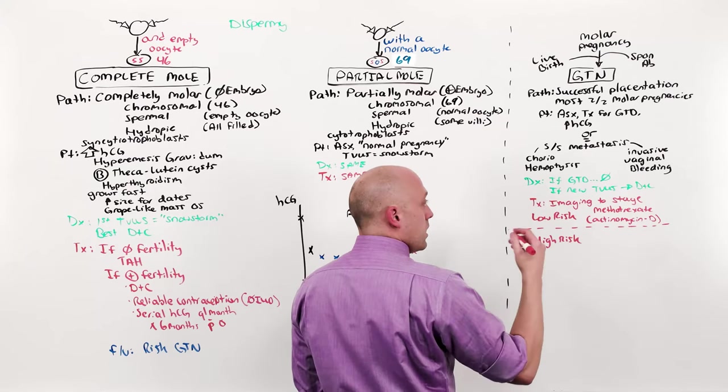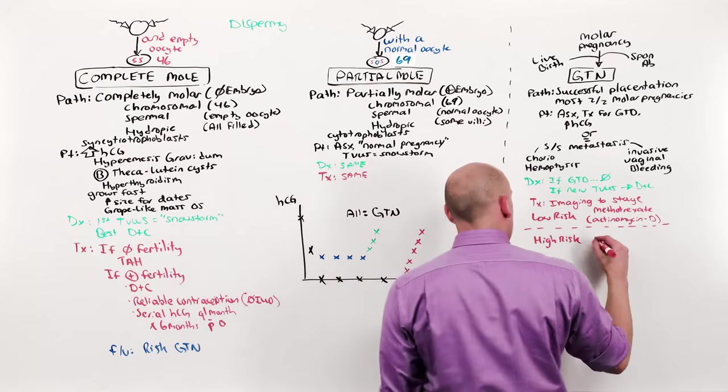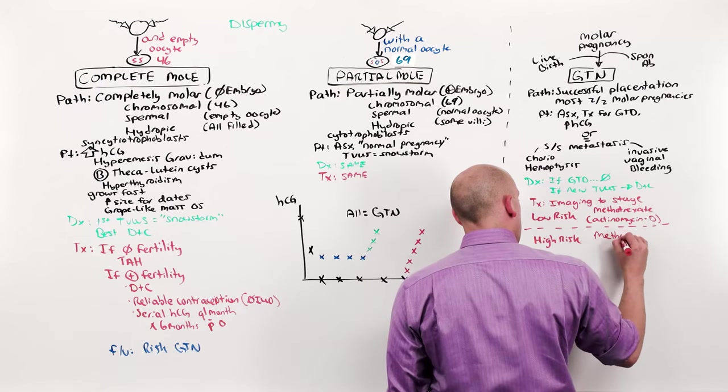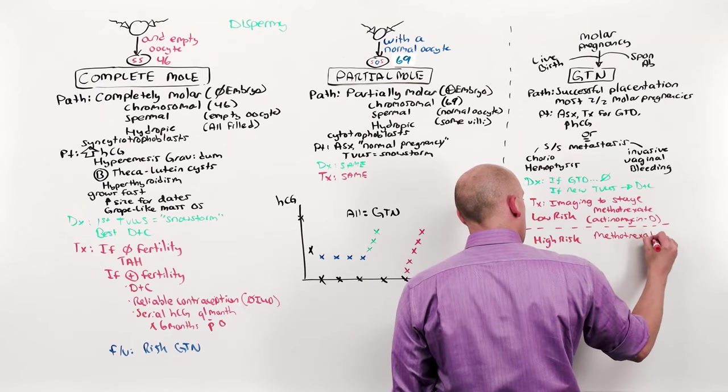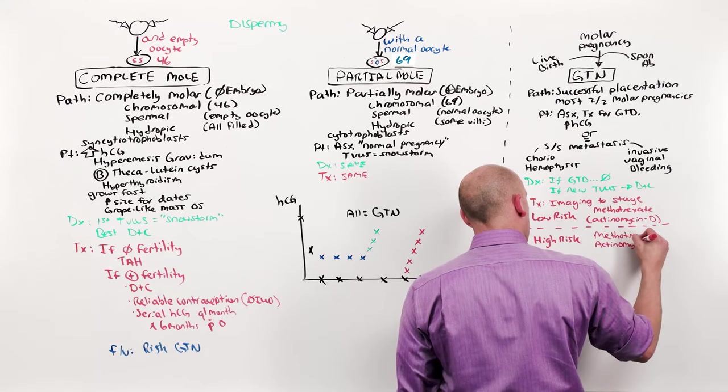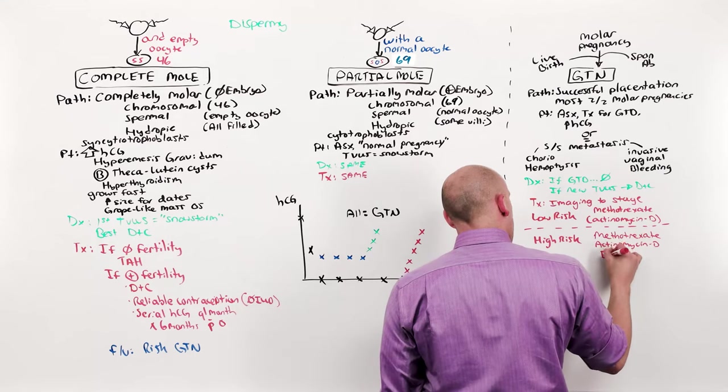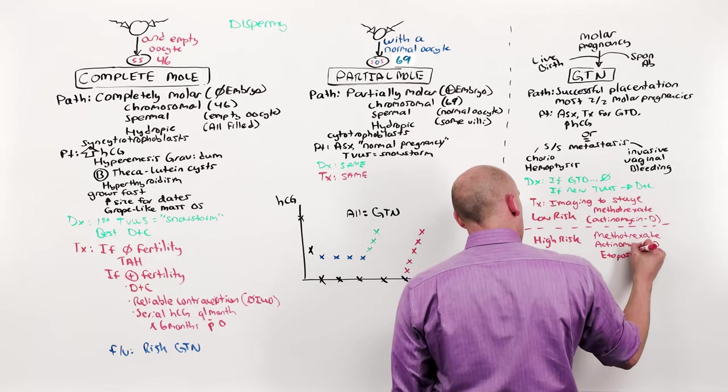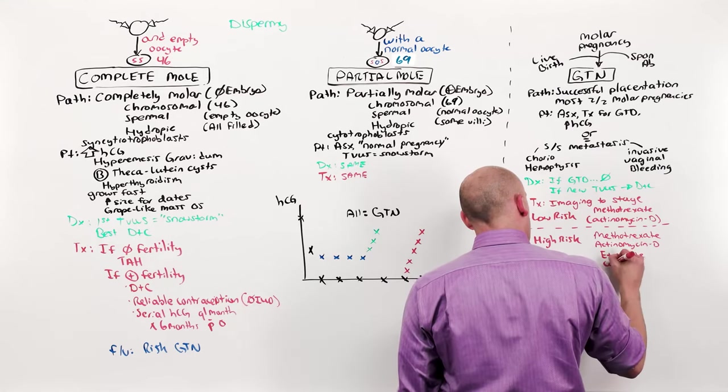If it's high risk, you're going to need multiple agents. That's methotrexate and actinomycin D, and etoposide and carboplatin.